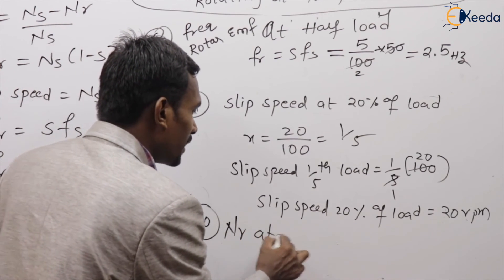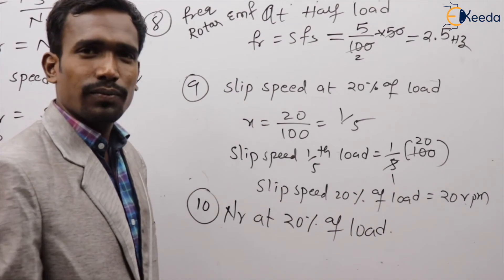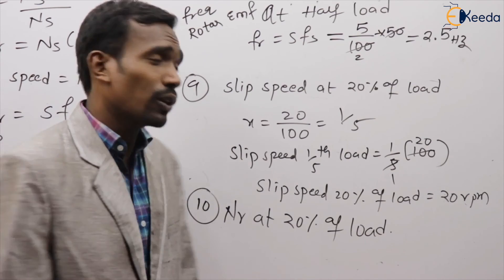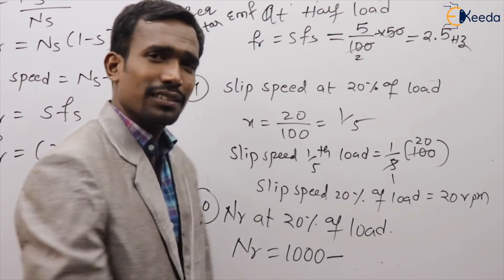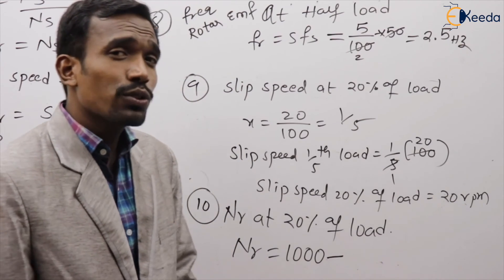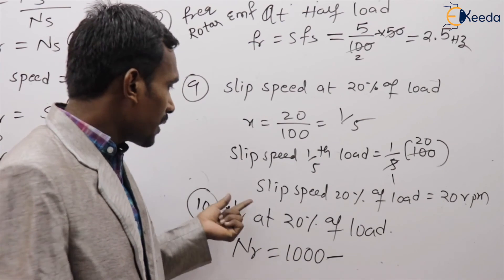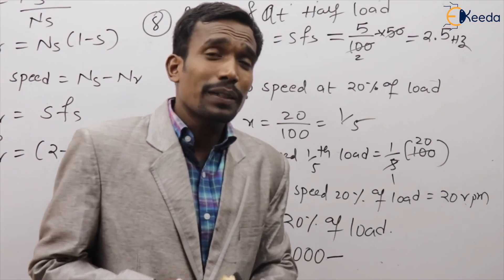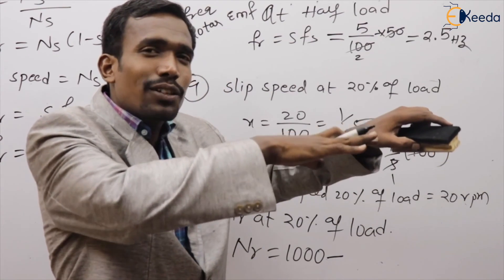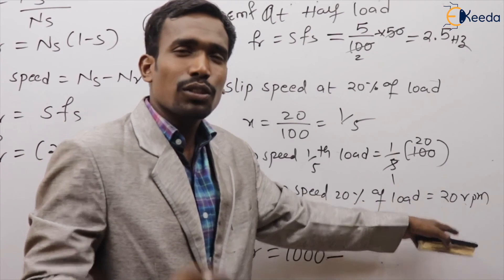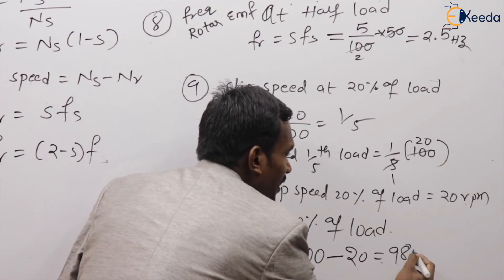Tenth question: what is the rotor speed at 20% of load? Rotor speed equals 1000 minus the slip speed at 20% load. Slip speed at 20% load is 20 RPM. So rotor speed equals 1000 minus 20 equals 980 RPM.